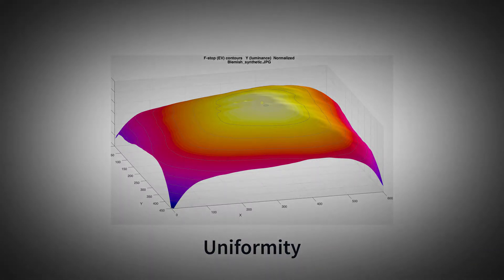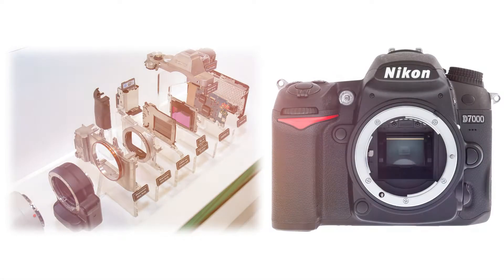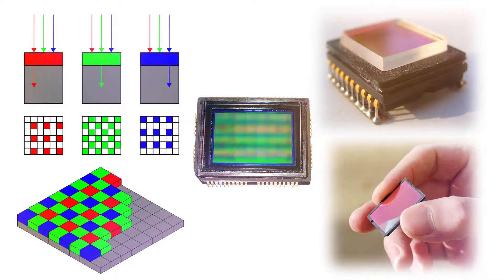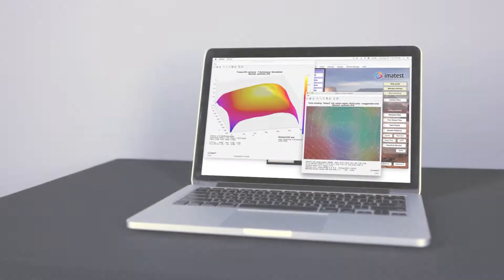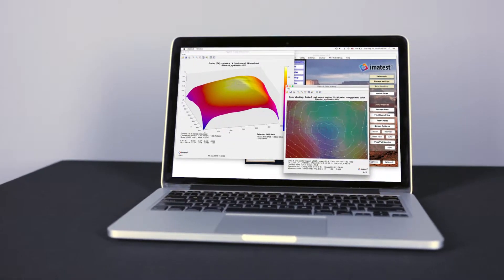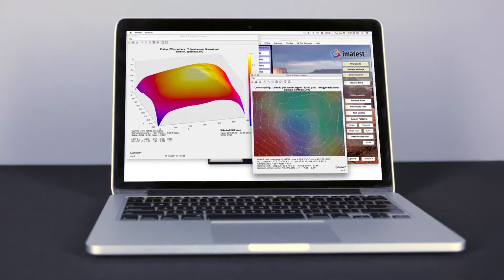lens shading or vignetting, is greatly affected by lens geometry. Color non-uniformity or color shading is affected by the chief ray angle of light projected on the sensor and the interaction of pixels with anti-aliasing, infrared, and color filters. Full characterization of an imaging system will involve testing using a range of different illuminant spectra, including daylight, fluorescent, and incandescent.